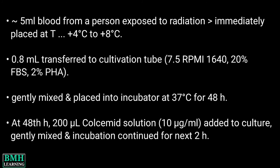For the procedure, around 5 ml of blood sample is obtained from a person exposed to radiation, and immediately after collection, placed into a fridge at a temperature of 4°C to 8°C. Then, 0.8 ml of blood from this sample is transferred to a cultivation tube having 7.5 ml of suitable medium consisting of the mentioned chemicals. The mixture is then gently mixed by hand.